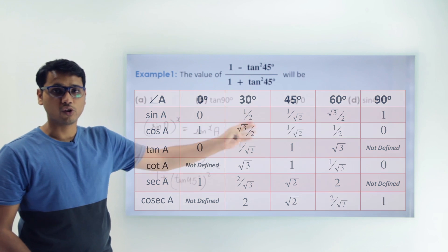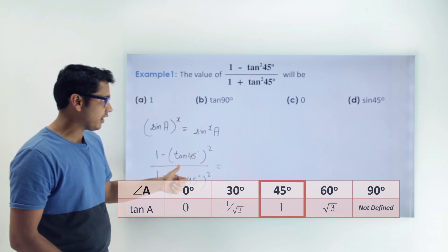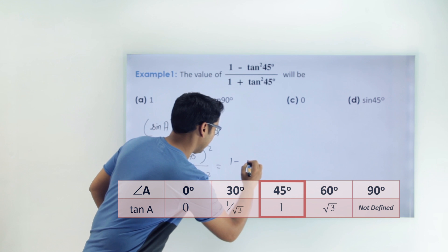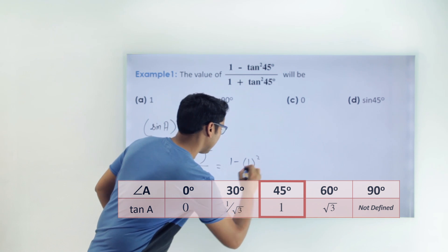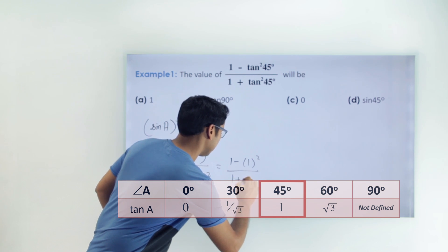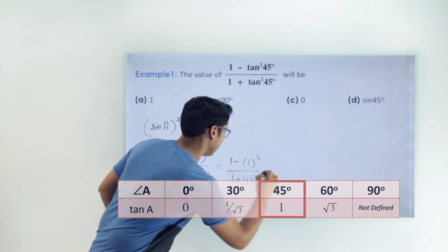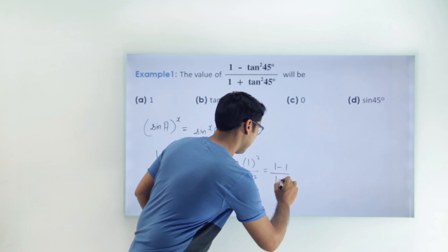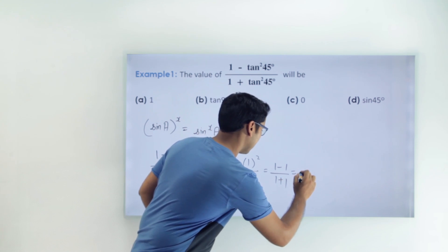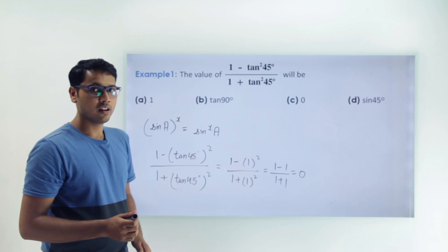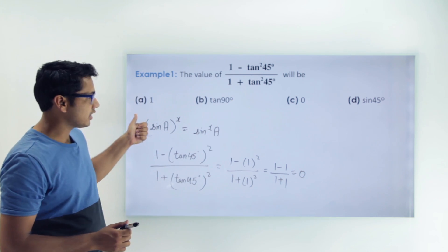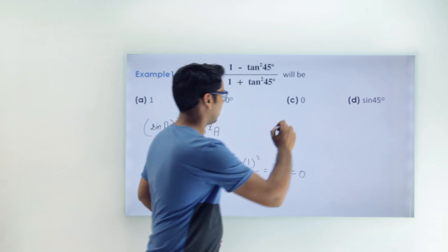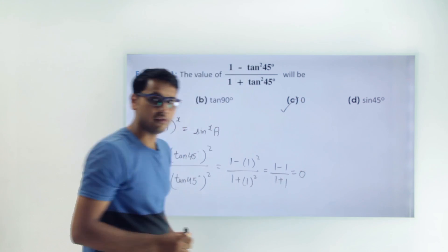Now putting the values from the table: tan 45 is 1, so this becomes (1 minus 1²) upon (1 plus 1²), which gives (1 minus 1) upon (1 plus 1), which is 0 upon 2 = 0. So the third option is correct.